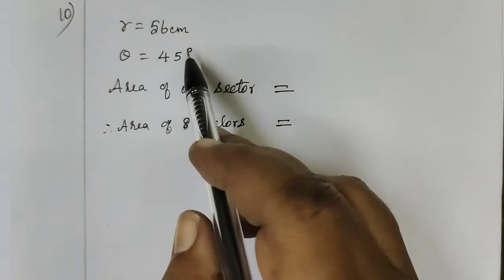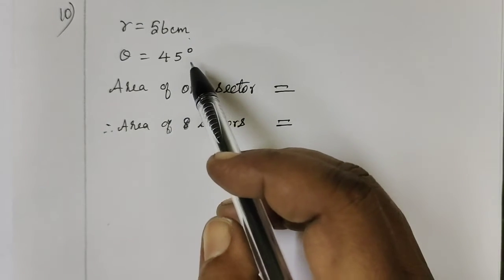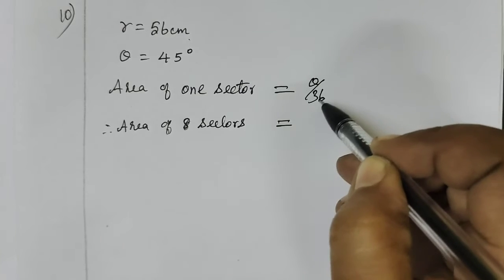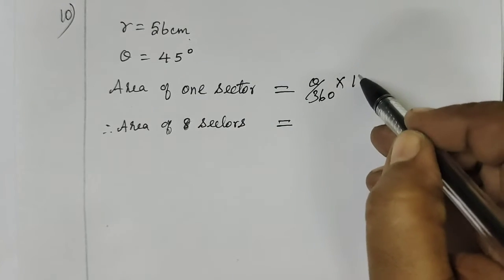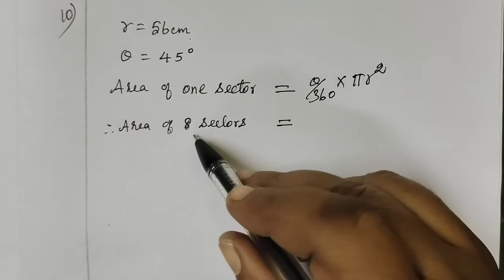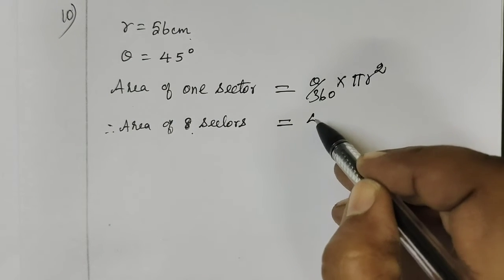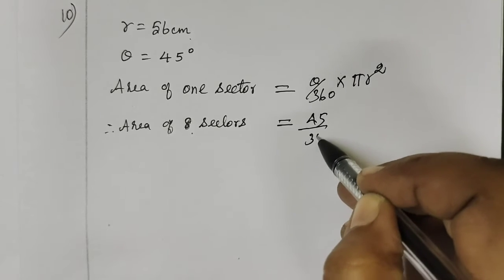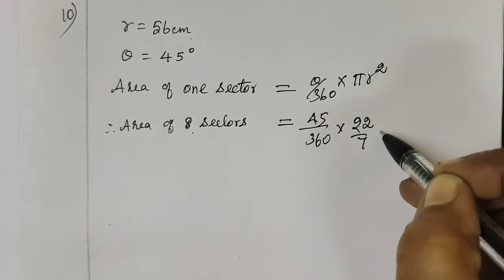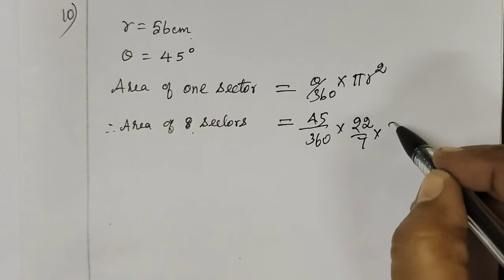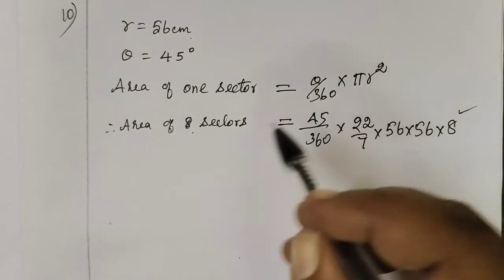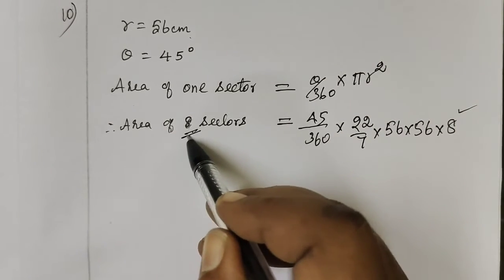Now for the next question: r is equal to 56cm, and theta value is 45 degrees. Area of the sector formula: theta by 360 into pi r squared. We need the area of 8 sectors, so theta is 45 degrees, pi is 22 by 7, r value is 56 into 56, multiplied by 8 for the total 8 sectors.